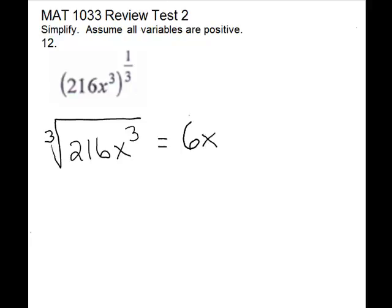That's the answer. If you don't see that 216 is a perfect cube, you can break it down. It's not so easy to break down, but it ends in an even digit. So you could start with 2: 2 times 108, and then you can keep breaking. 2 is prime, and this one is even again, so you can do 2 times 54. 54 is down to a number you would know, so you can do 9 times 6. And 2 is prime.